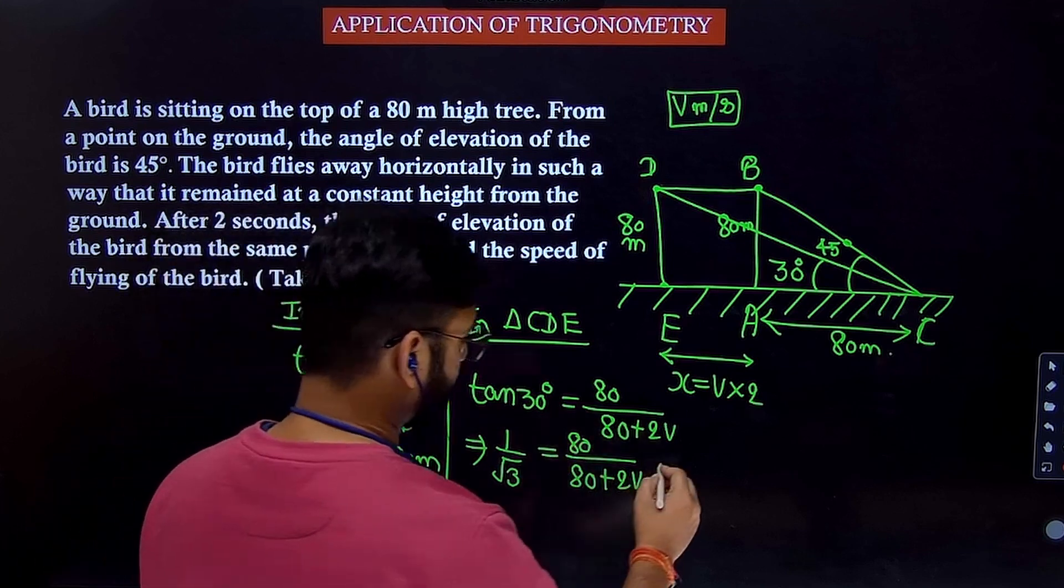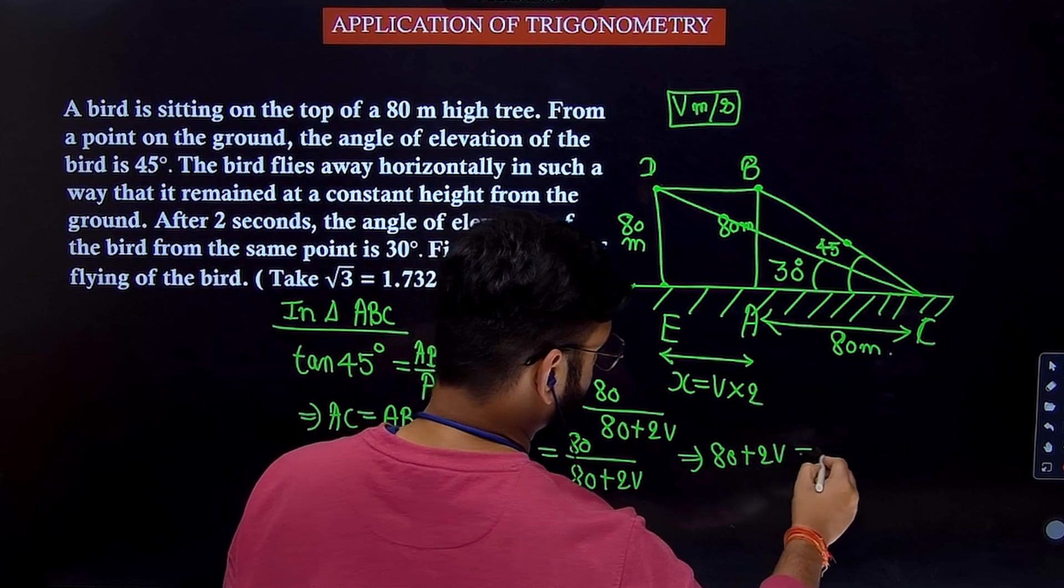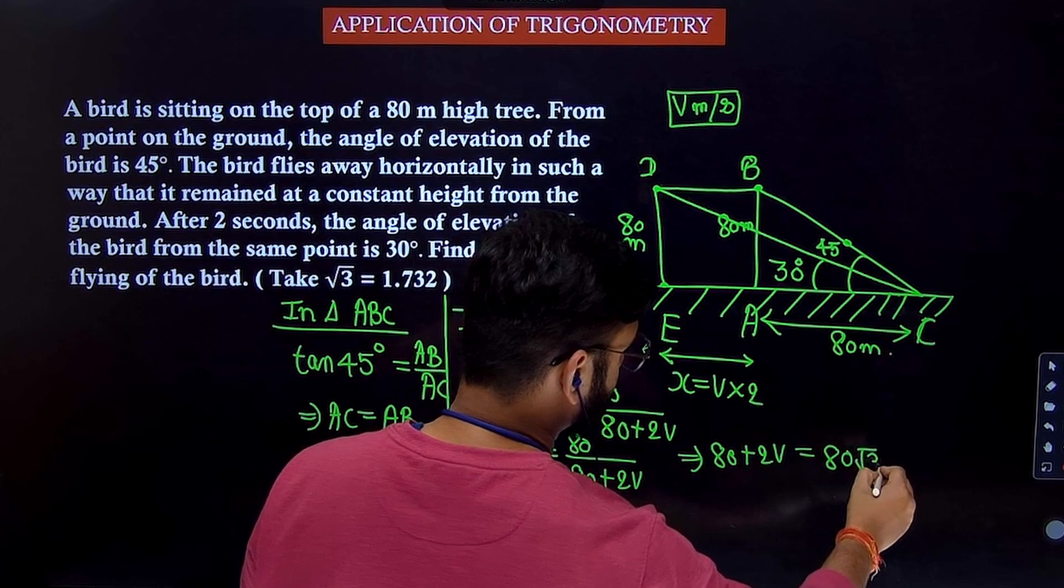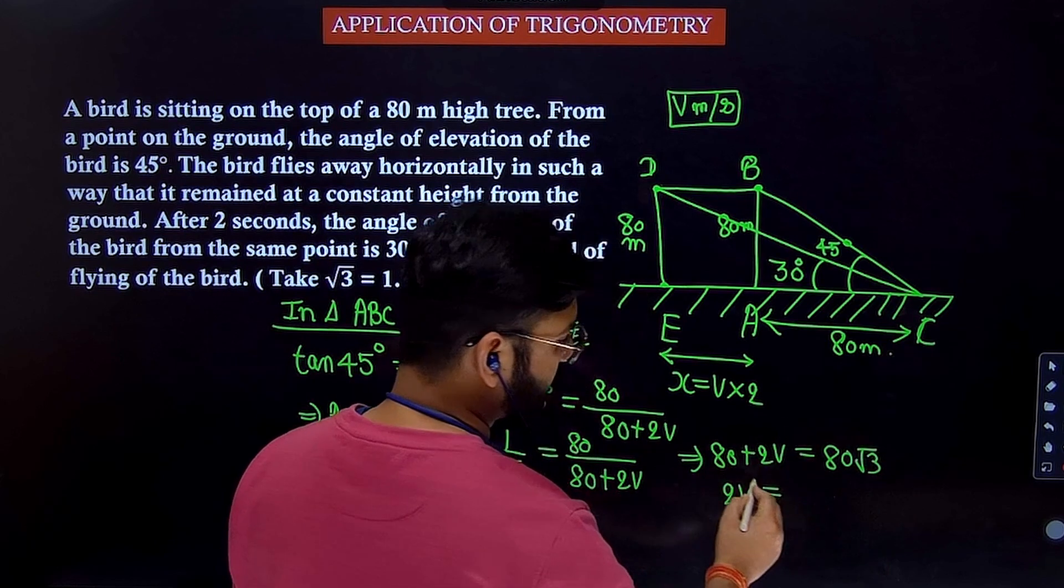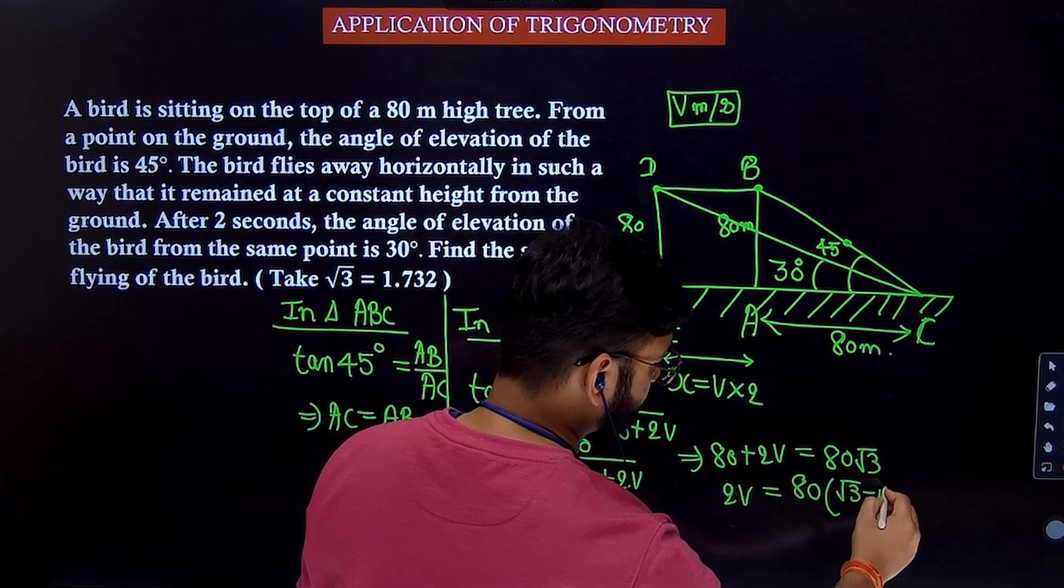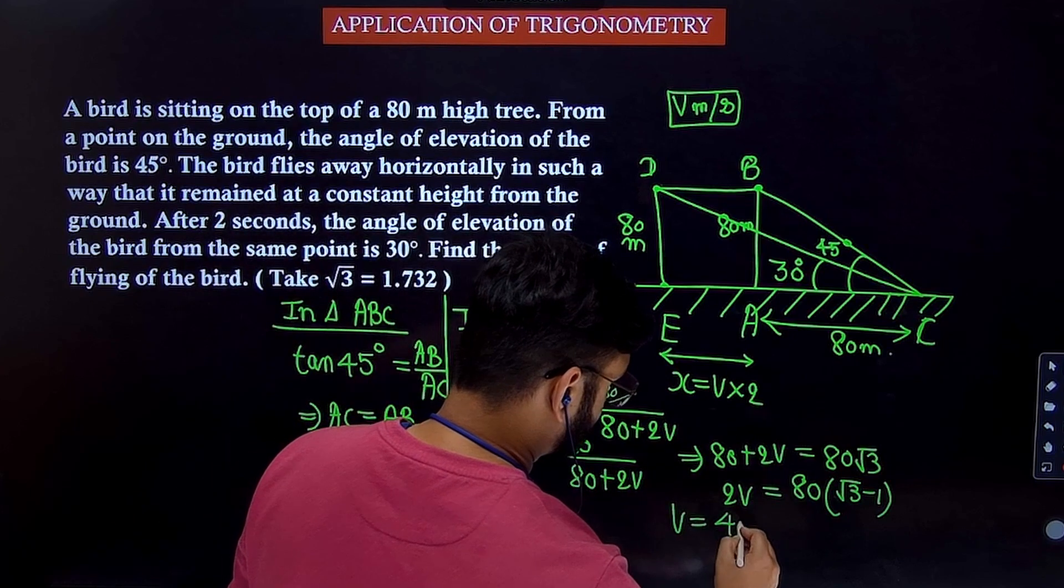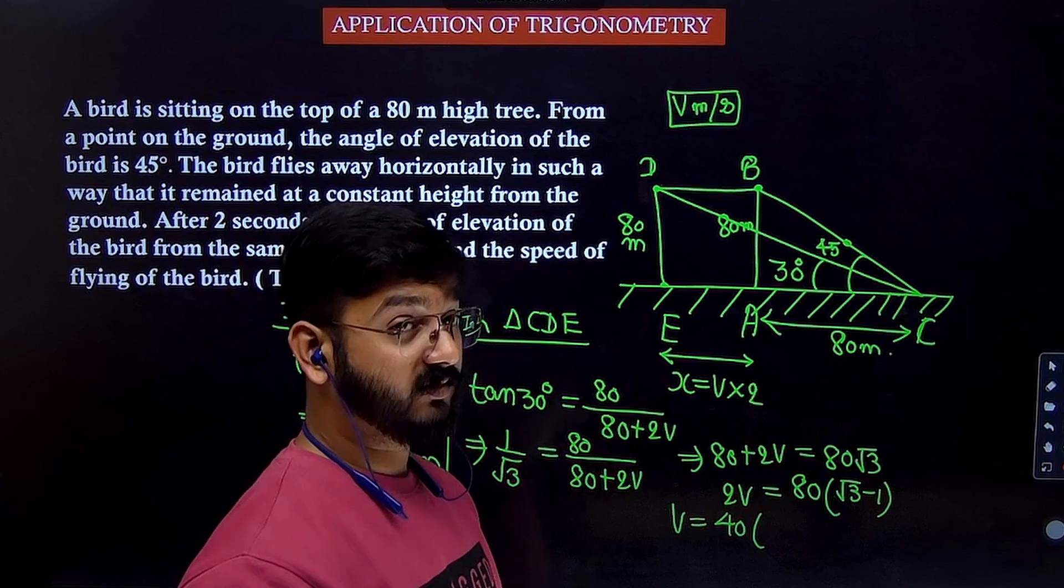Cross multiply. So when you cross multiply, it will be 80 plus 2V equal to 80 root 3. So 2V equal to how much? 80 you can shift on that side. Then take 80 common, 80 root 3 minus 1. So V will be what? 40 times of root 3 minus 1.